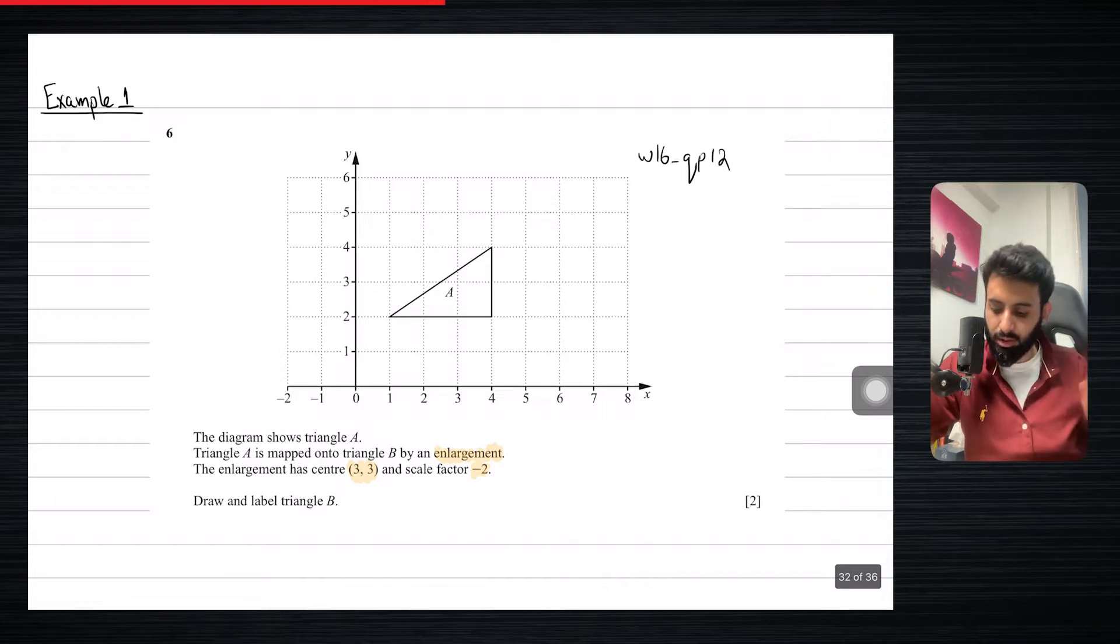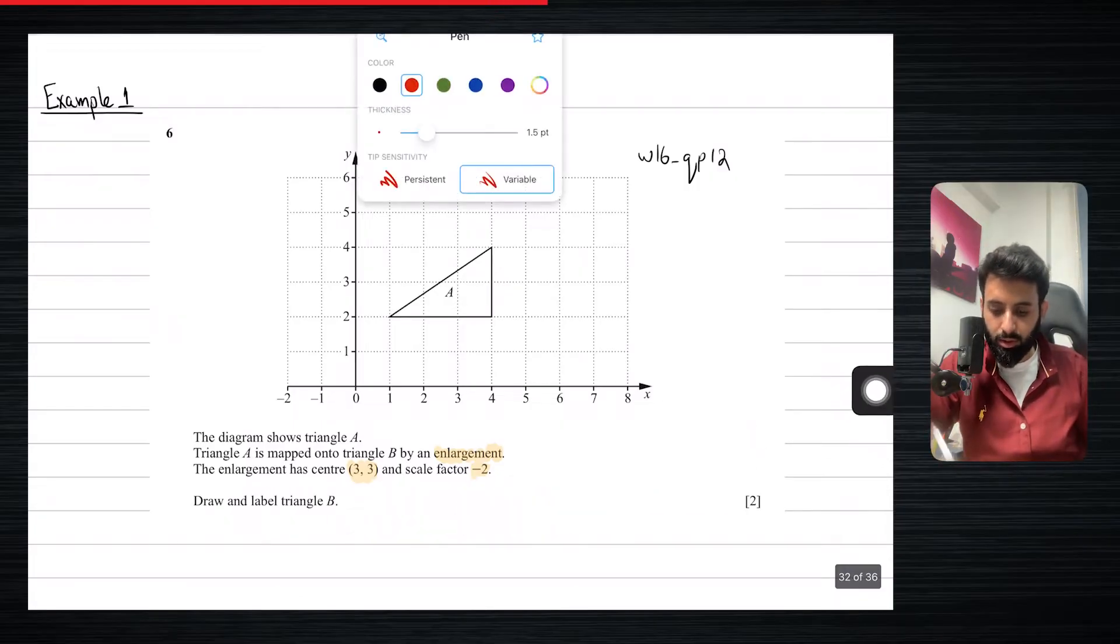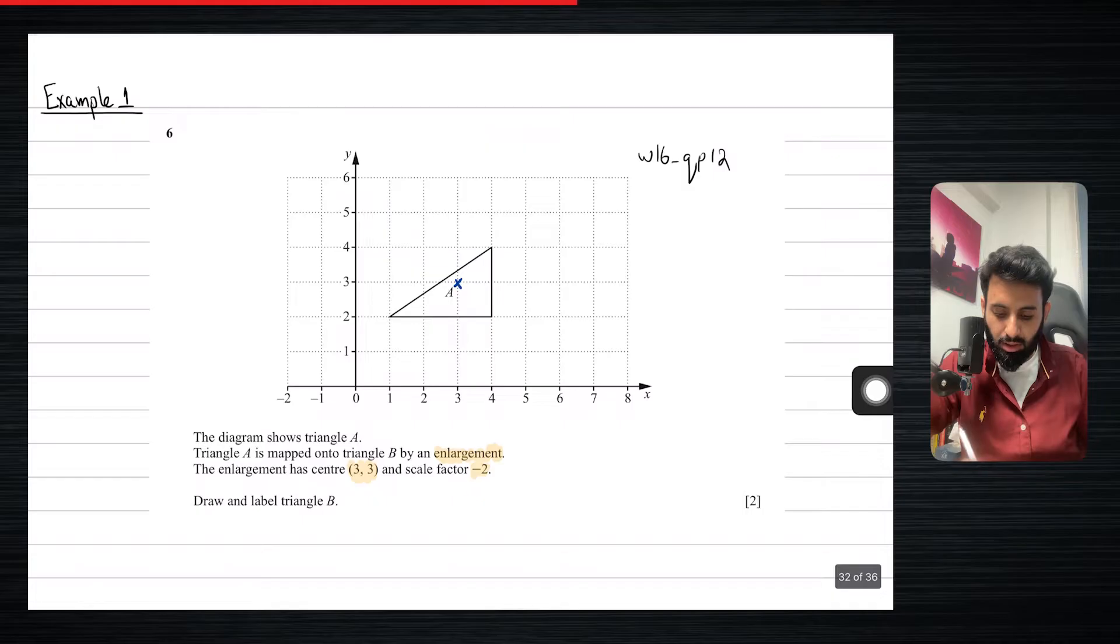The diagram shows triangle A. So we can see triangle A. Triangle A is mapped onto triangle B by an enlargement. The enlargement has center (3, 3) and scale factor minus 2. So first thing you want to do is you want to put a big cross on the center so that you know exactly where to start from. So this is the center, the scale factor is minus 2.